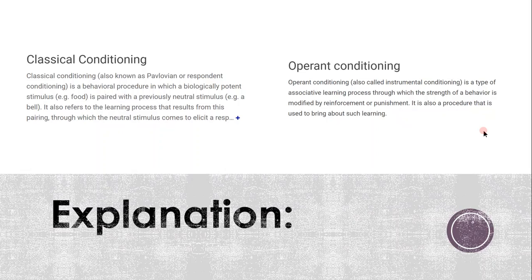Classical and operant conditioning — to know the difference: classical conditioning, also known as Pavlovian or respondent conditioning, is a behavioural procedure in which a biologically potent stimulus is paired with a previously neutral stimulus — like a bell. It also refers to the learning process that results from this pairing. Operant conditioning, also called instrumental conditioning, is a type of associative learning process through which the strength of a behaviour is modified by reinforcement or punishment.